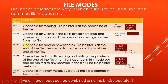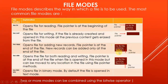ios::app opens the file for adding new records. If the file is already created and you want to add new data, use ios::app mode. In this case, the file pointer is at the end of the file and you can only add new data at the end. So the file pointer is positioned at the end, and any new data is appended after the last record.